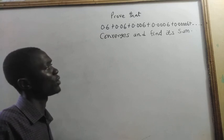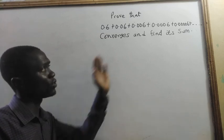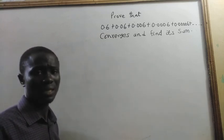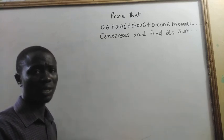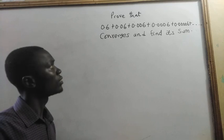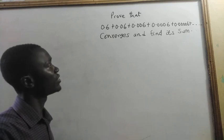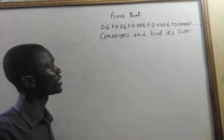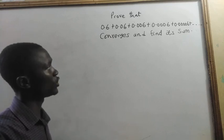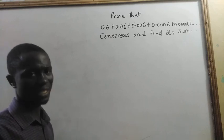The type of series that we have here, or the type of sequence that is going on there — this is very simple. If you look at it, this is a geometric series.